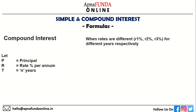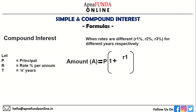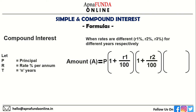When rates are different — R1 percent, R2 percent, R3 percent — for different years respectively, it is similar to the successive percentage changes formula. Amount A is equal to P into 1 plus R1 by 100, into 1 plus R2 by 100, into 1 plus R3 by 100.